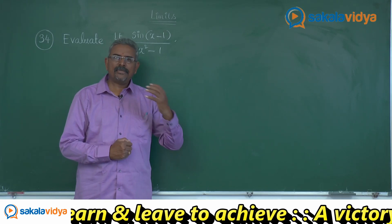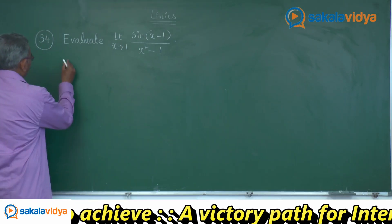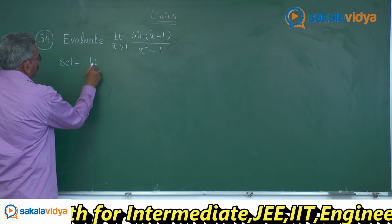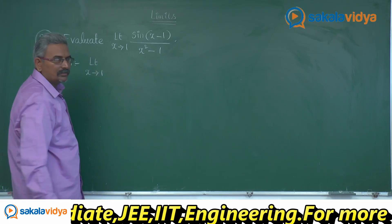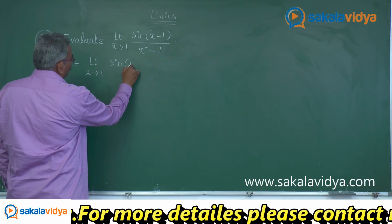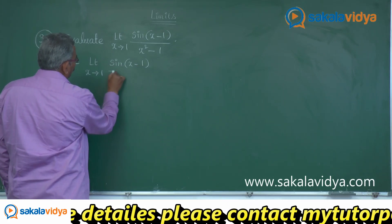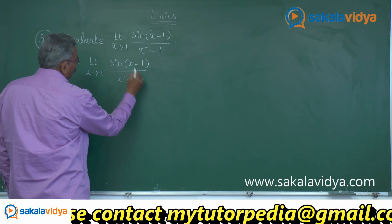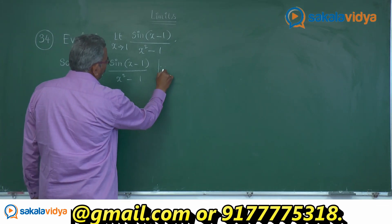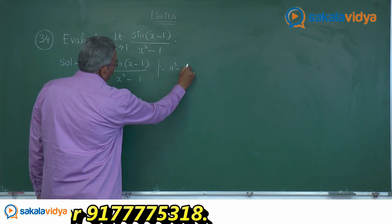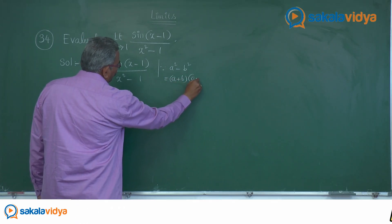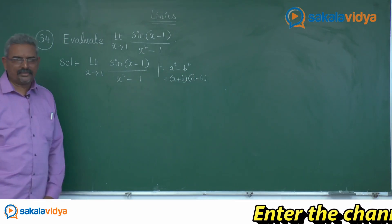Now let us begin the solution. Limit x tends to 1 of sin(x-1) divided by x squared minus 1. Here, x squared minus 1 can be simplified using the identity a squared minus b squared equals (a+b)(a-b), which is one of the important algebraic identities.